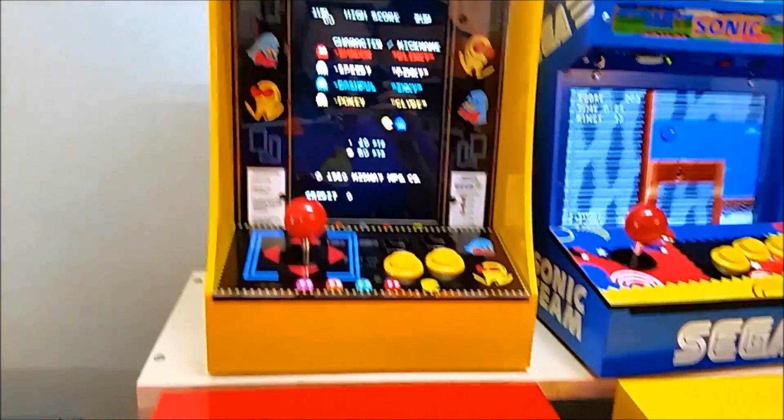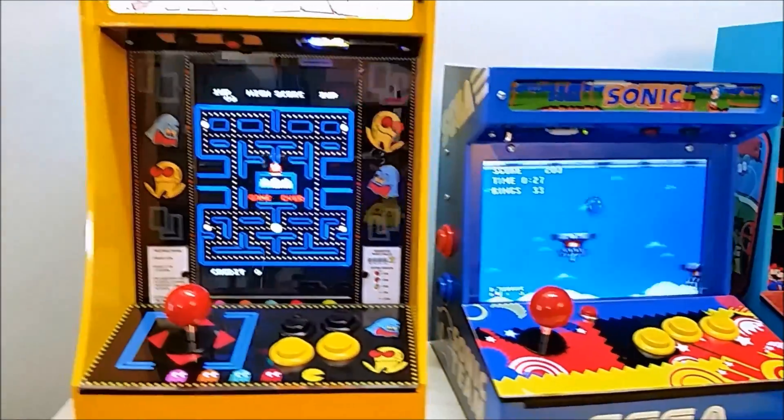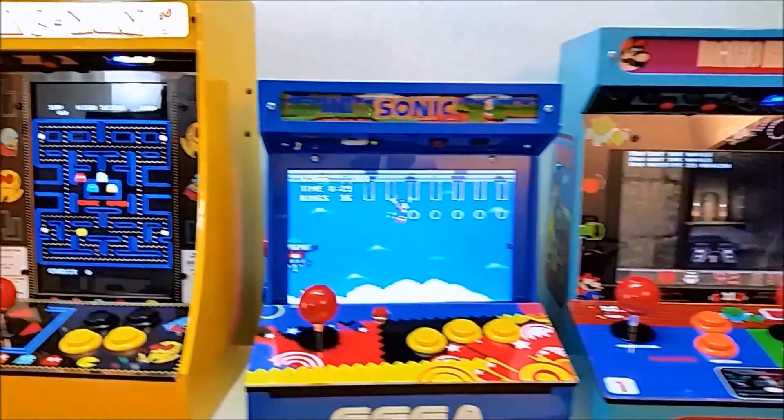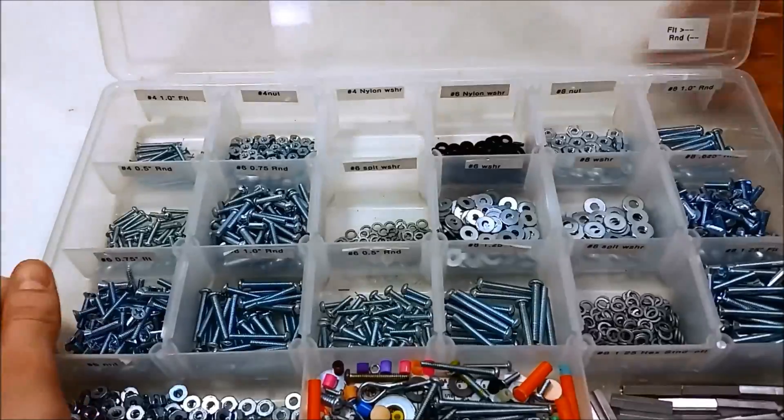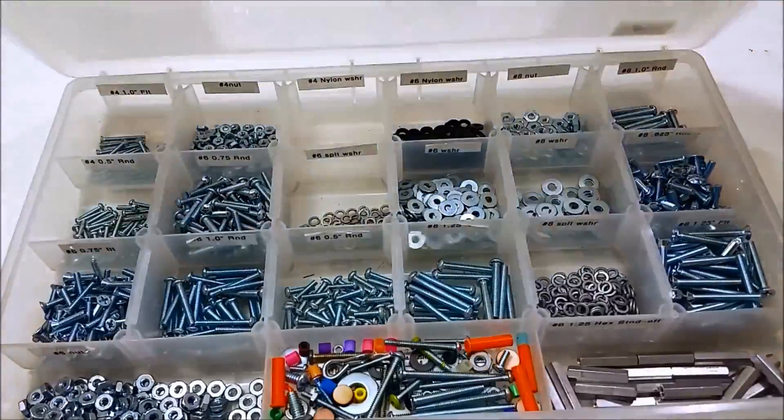Now, every kit I sell, I try to include all the parts you need, and part of those parts is an assortment of nuts, bolts, screws, washers, and so on. This is what it looks like. So I count this by hand, and I've been doing this by hand for longer than I care.